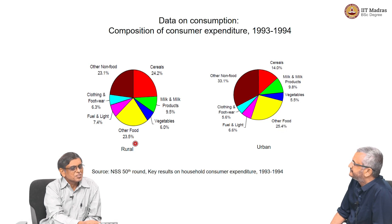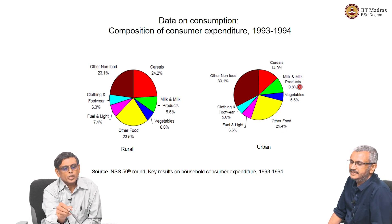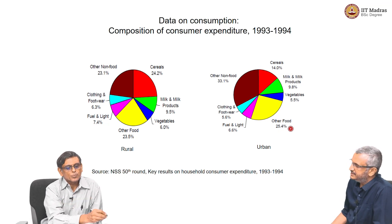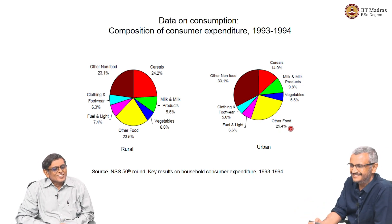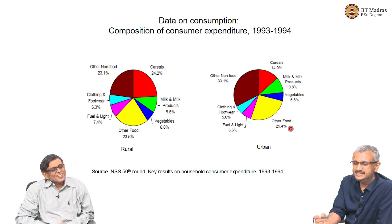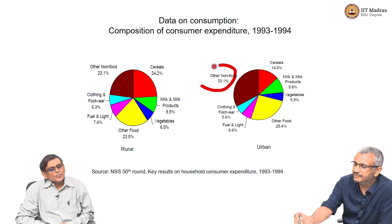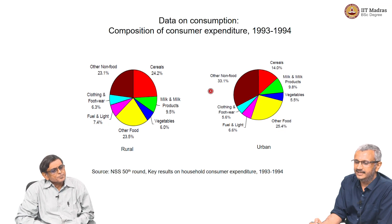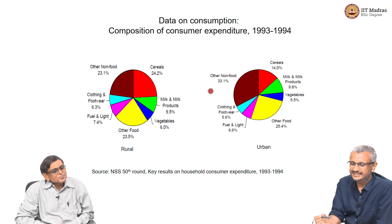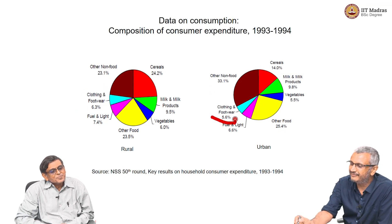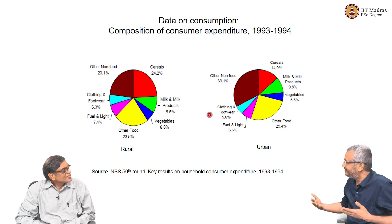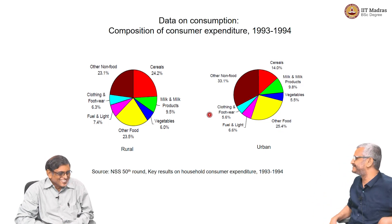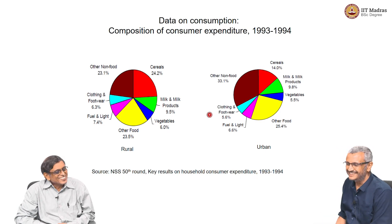I suspect food share will have come down since this is 1993-94 and the economy has become richer. The change here is that other non-food expenditure in rural is very low, but urban non-food expenditure is about 10 percent more. One more interesting fact: clothing and footwear is 6.3 percent in rural but only 5.6 percent in urban. Rural people are keen on spending on clothing and footwear — that is what we call conspicuous consumption — related to celebration and satisfaction.